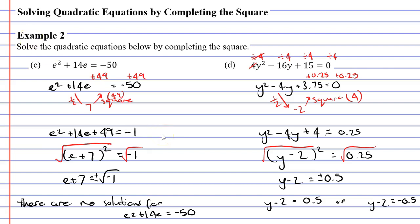We need to add 2 to both sides to cancel the minus 2. This gives us y equals 2.5 as one solution. And when we add 2 to the other equation, we get y equals 1.5 as our second solution. That concludes our video on example 2. Remember to read the description below for links to work booklets that relate to this video.